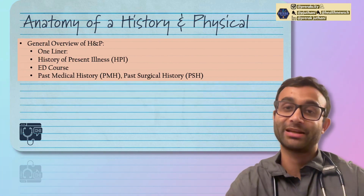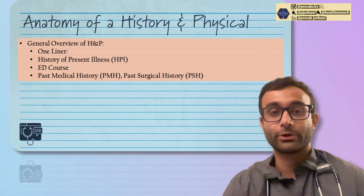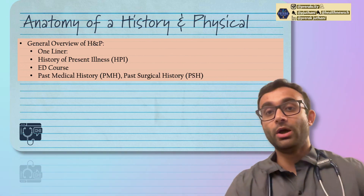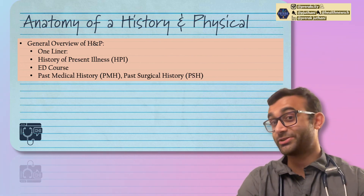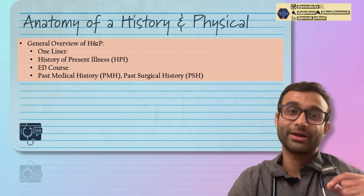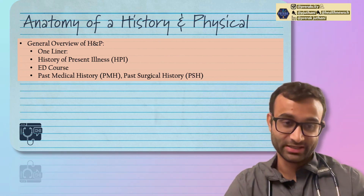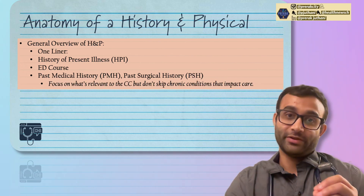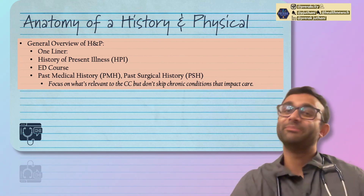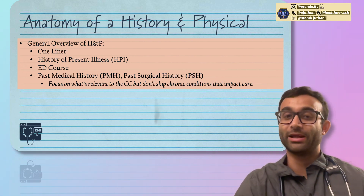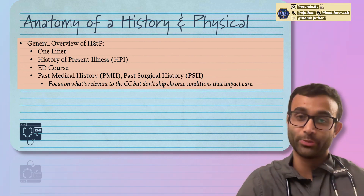Next, go into the past medical history and past surgical history. It's a 30,000-foot overview: what big medical conditions do you have that we should be aware of, and what past surgeries have you had? If they've had a surgery in the last few weeks and they're presenting, it's probably linked — post-op pain, complication, whatever it is. Focus on what's relevant to the chief complaint: if someone's having chest pain, ask about history of heart disease, breathing difficulties, COPD, and related conditions.